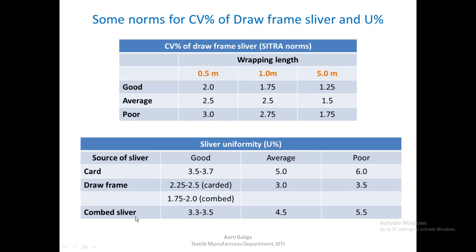For a combed sliver measured after combing, the U percentage norm becomes slightly less strict because we always see some defect known as a piecing wave in the final combed sliver. The average value in this case is 4.5, and poor would be 5.5. The piecing wave will be studied when we cover the comber syllabus.